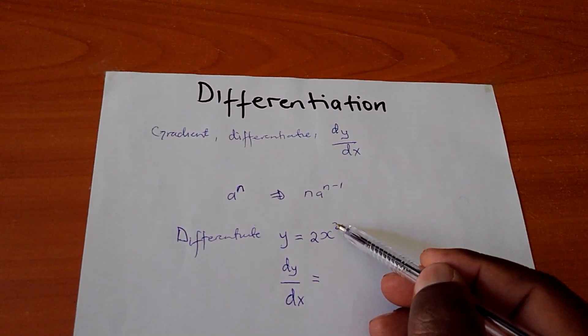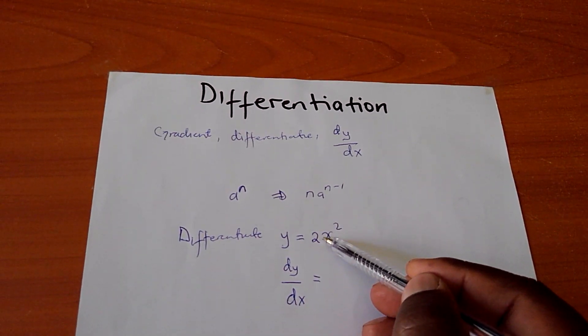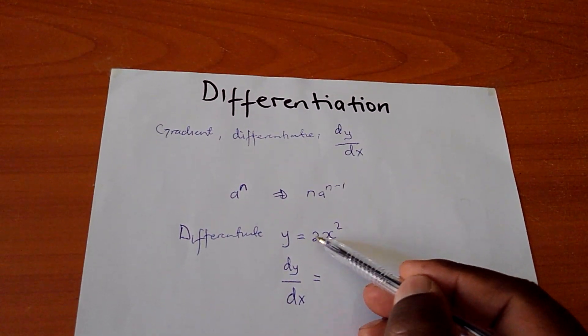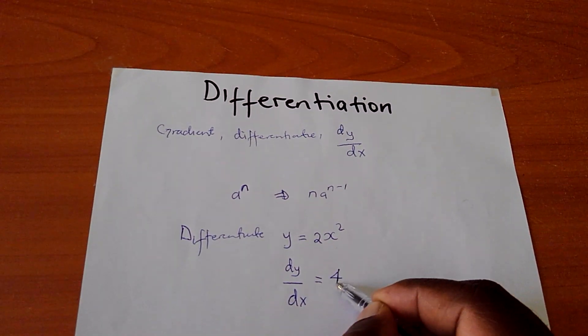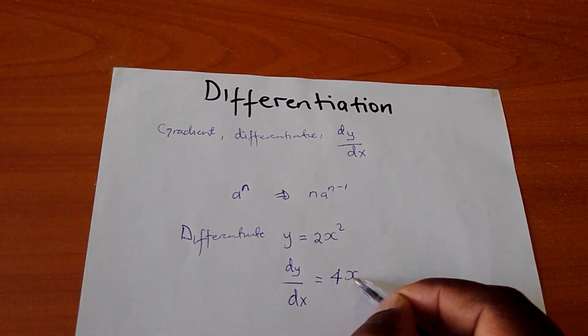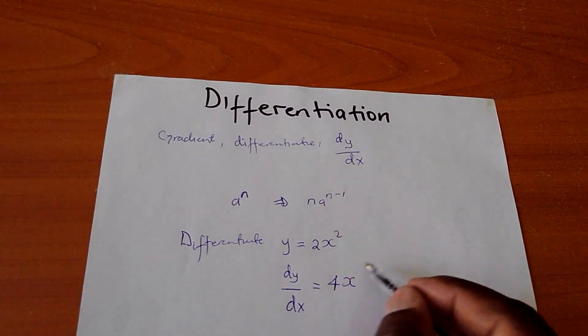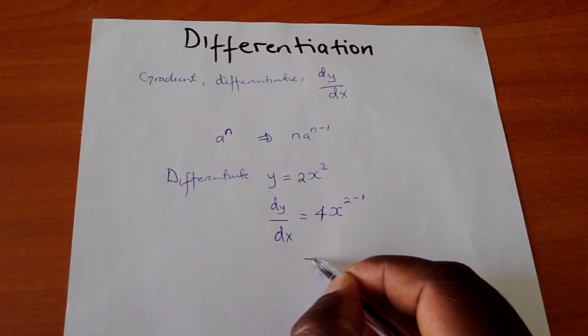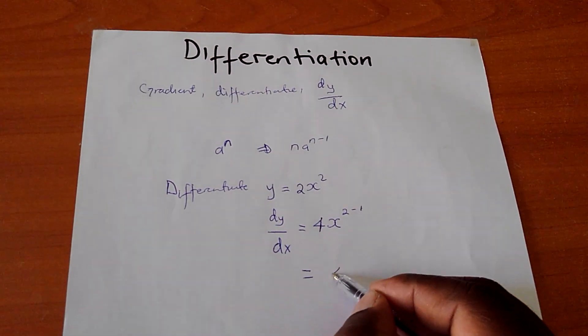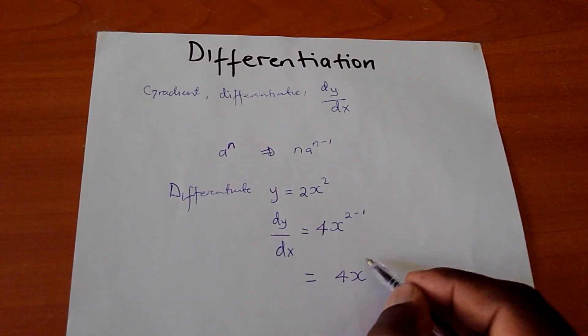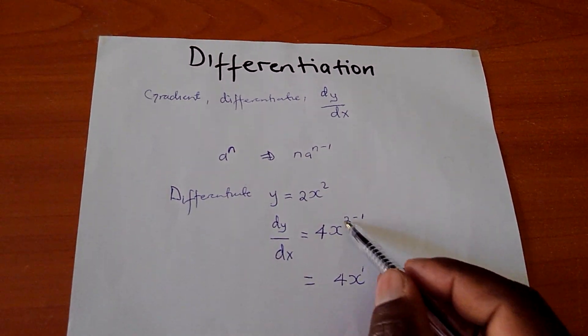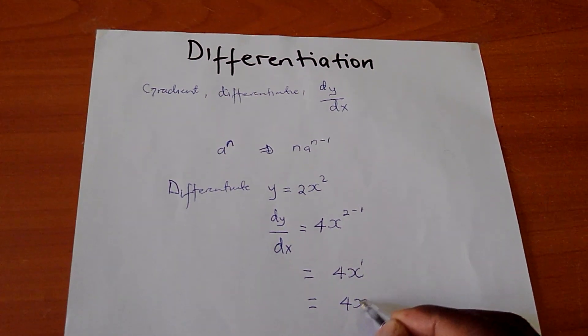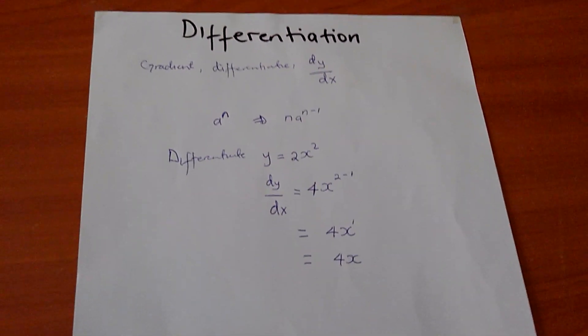So, remember, it is 2 times the coefficient of x, which will be 4 this time, x. Then, I have to subtract 1 from the power 2. So, my answer will be 4x to power 1. 2 minus 1 is 1, which is the same as 4x. That is basically differentiation.